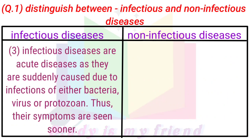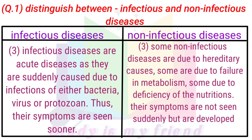Infectious diseases are acute diseases as they are suddenly caused due to infections of bacteria, virus, or protozoa, thus their symptoms are seen sooner. Some non-infectious diseases are due to hereditary causes, some are due to failure in metabolism, some due to deficiency of nutrients. Their symptoms are not seen suddenly but are developed gradually.